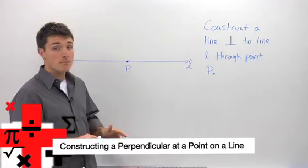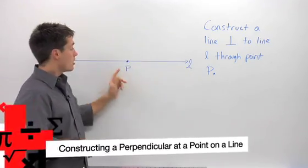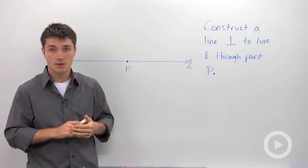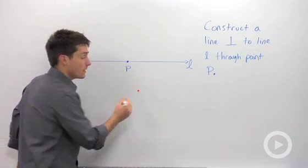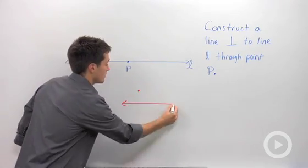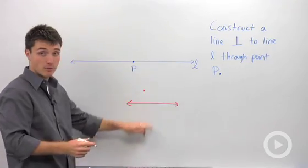When you're asked to construct a line perpendicular to a given line through a point on that line, it's going to be similar to the process of when you have a point not on the line and you're trying to find that perpendicular.